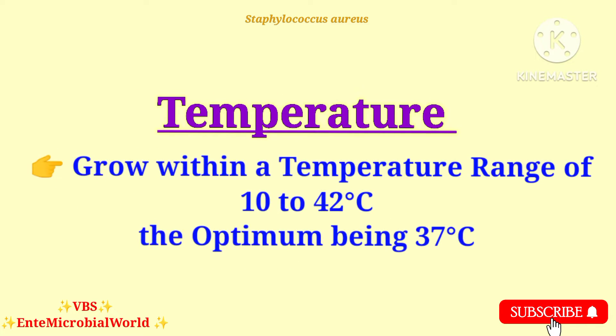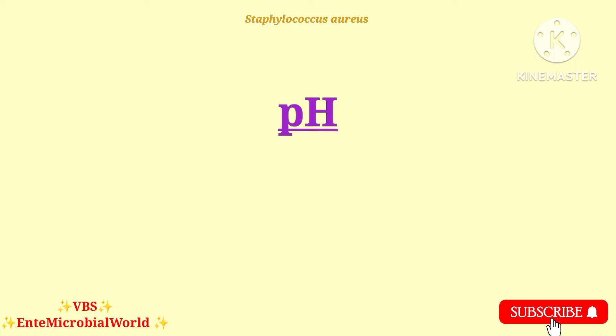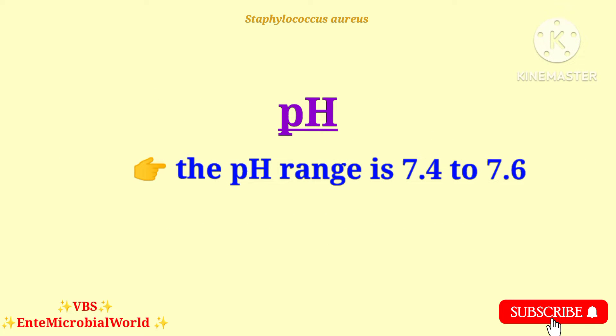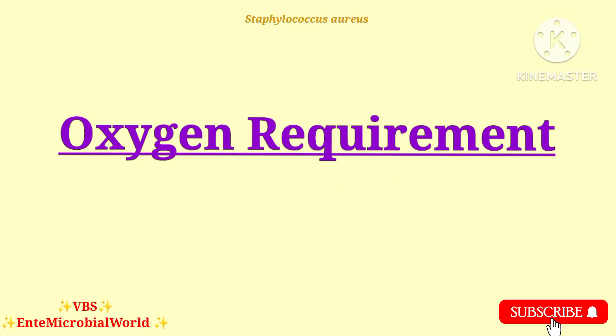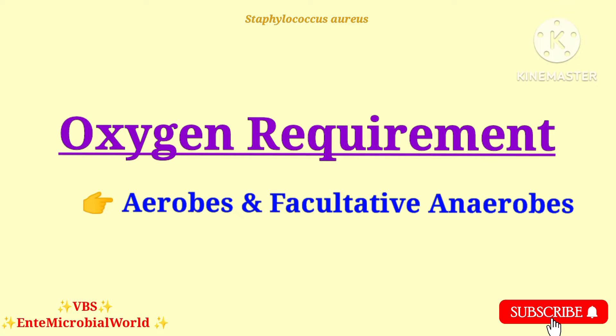Temperature: Staphylococcus aureus grows within a temperature range of 10 to 42 degrees Celsius, the optimum being 37 degrees Celsius. pH: the pH range is 7.4 to 7.6. Oxygen requirement: they are aerobes and facultative anaerobes, meaning they can grow under conditions with or without oxygen.